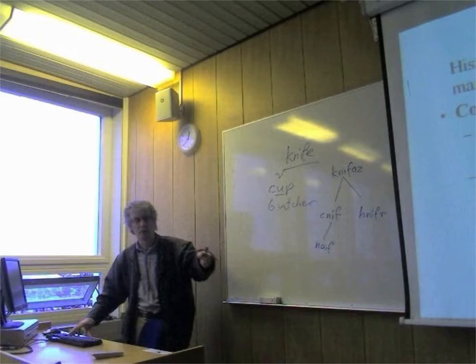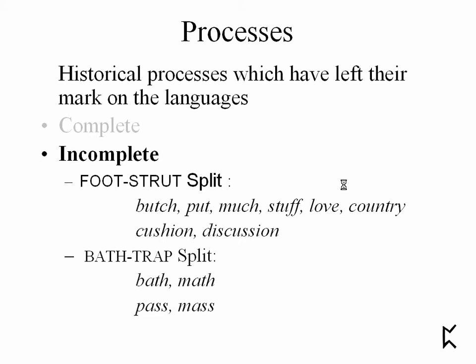So those are complete processes which you can forget about, but just remember they may explain some strange spelling things in English. Let's look at some incomplete processes which are still going on, or may have stopped before they finished. One of them is the foot-strut split. You've got: butch, put, much, stuff, love, country, cushion, discussion. It's very difficult to know which is which - why butch but much, why cushion but rush?